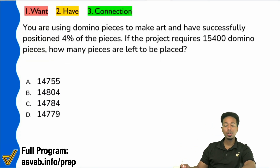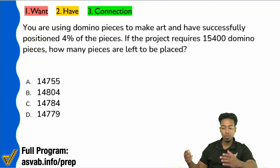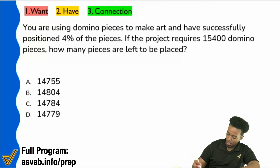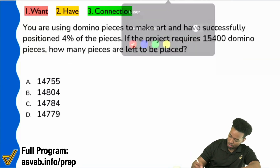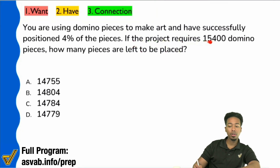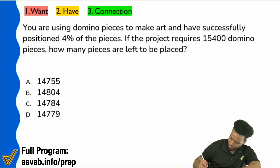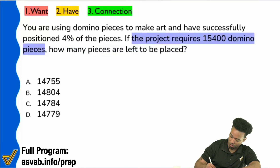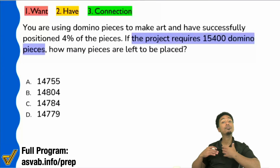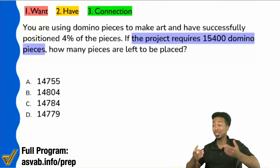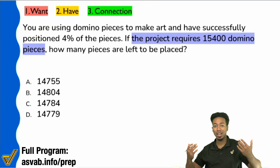So here we go. Step one: read the question sentence. What is it that I'm looking for? It says, if the project requires this many domino pieces, how many pieces are left to be placed? They're going to give you some information — the project requires 15,400 domino pieces. The first step is: what's the question? What do I want to do? I don't care about the ifs. I care about the whats.